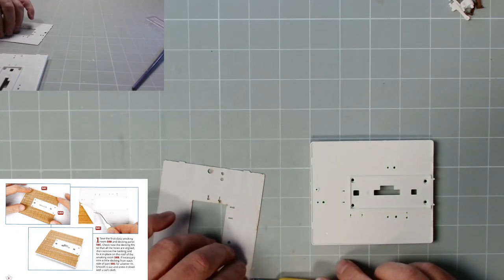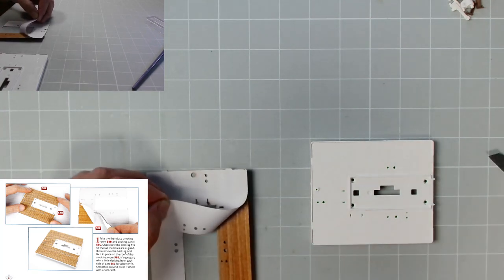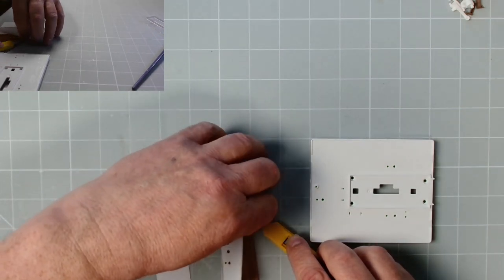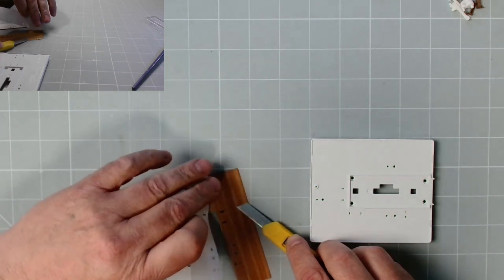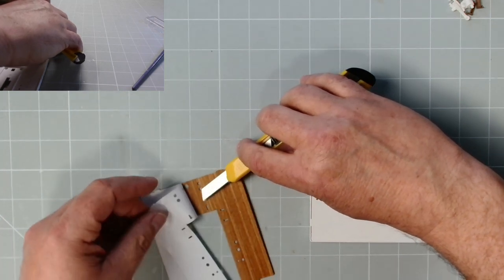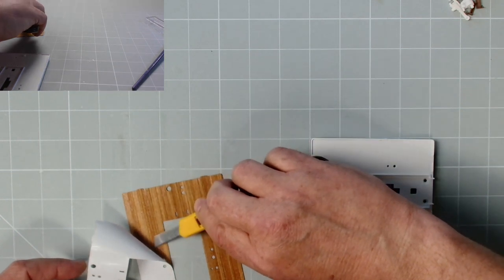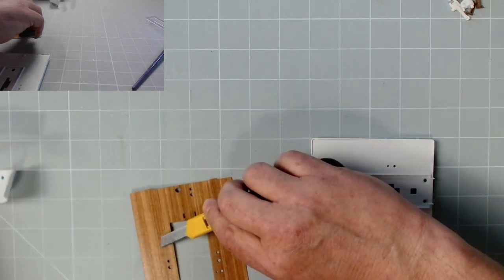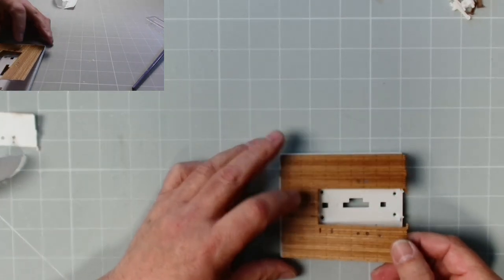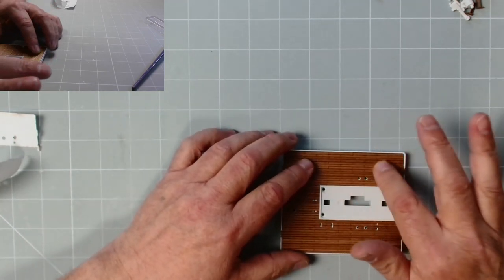Now what we can do is put that to one side and see if we can get this paper backing off. Gently does it. Now I know it matches up and we can just drop that into place just like that.